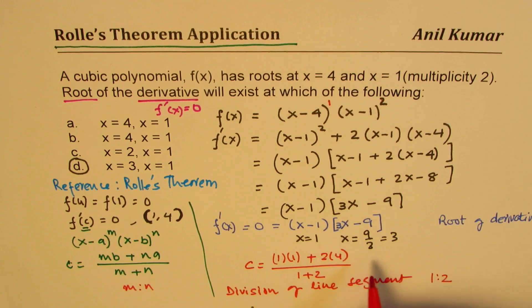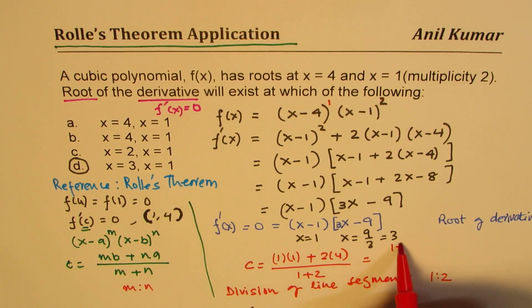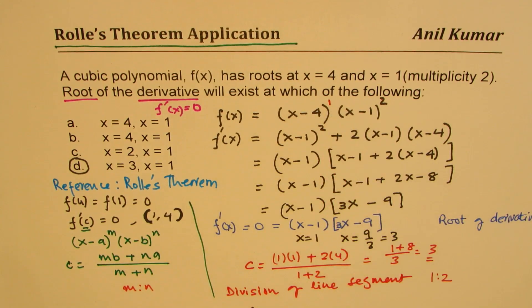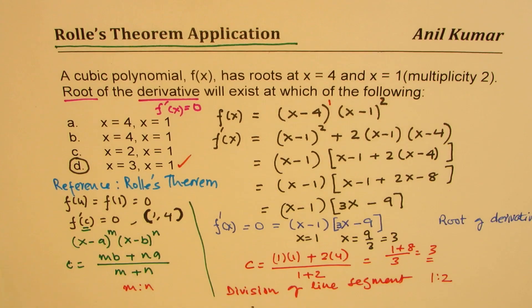You get the idea, right? So if you calculate this, you get 1 plus 8 over 3, which is 3. So without doing any calculations, we can immediately get to our solution.